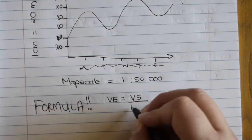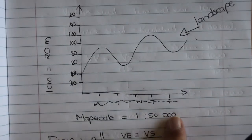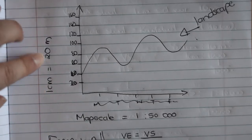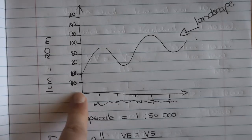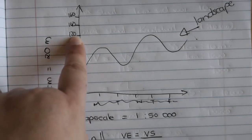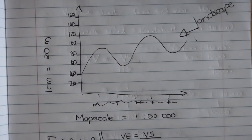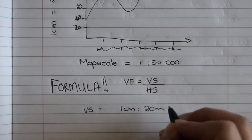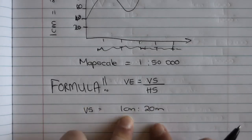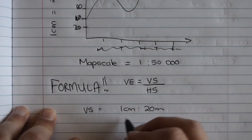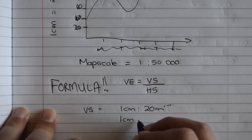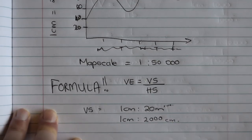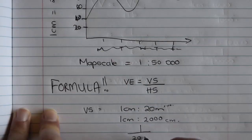The information you have is the map scale and one centimeter equals 20 meters — that's your vertical scale. It's telling you that for every centimeter you go up, it's getting 20 meters higher. To use it, we say vertical scale equals one centimeter represents 20 meters. But we can't have centimeters and meters mixed — we need both in centimeters. So we multiply by 100, giving us one centimeter equals 2,000 centimeters. Written as a fraction, that's 1 over 2,000.